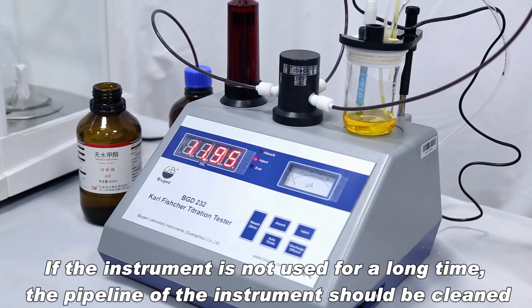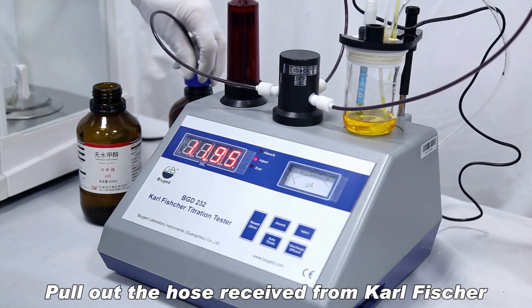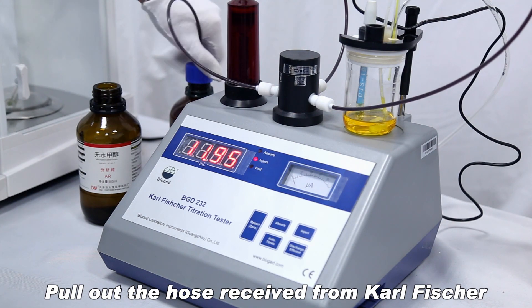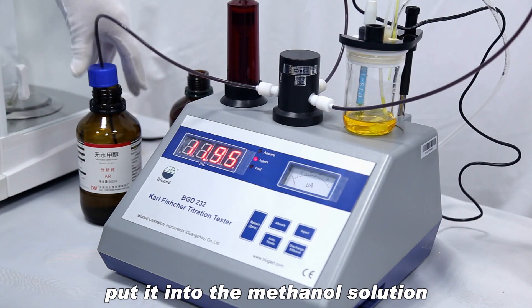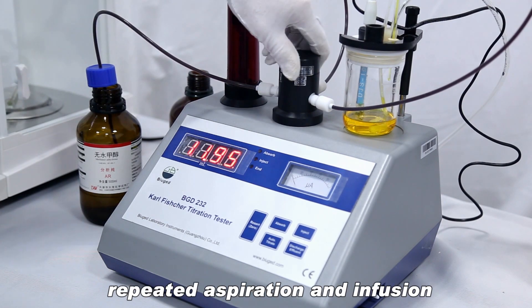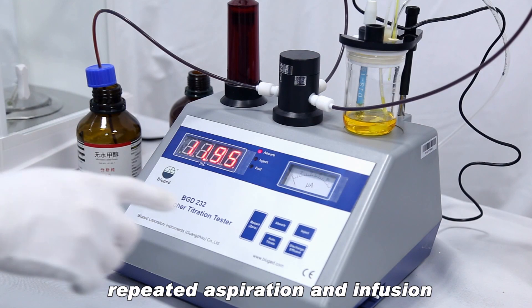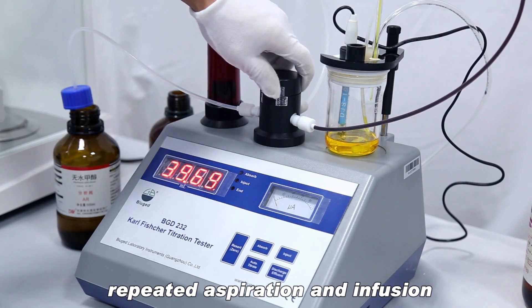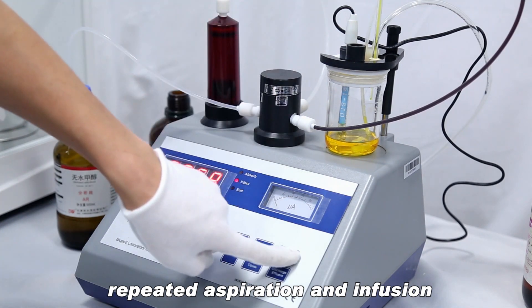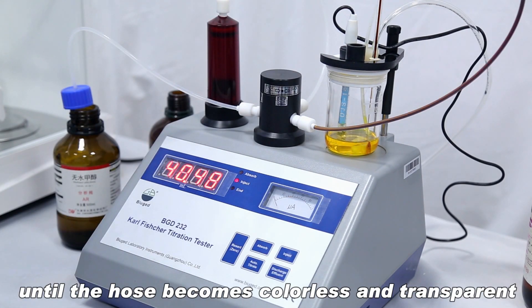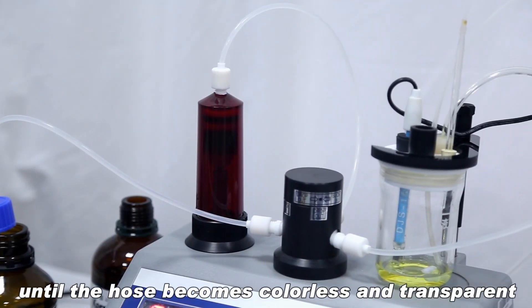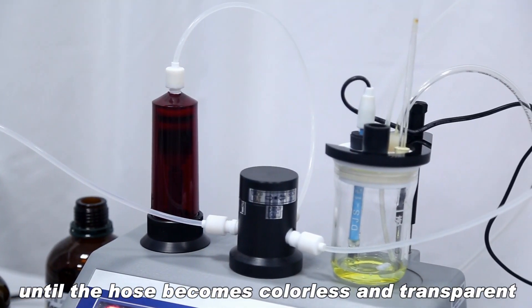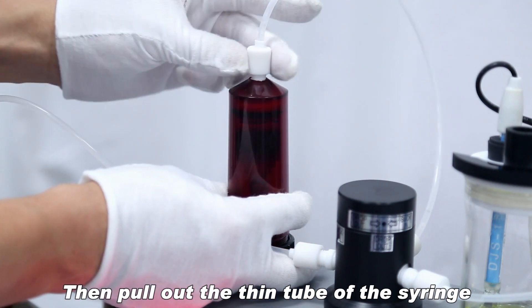If the instrument is not used for long time, the pipeline of the instrument should be cleaned. Pull out the hose received from Karl Fischer. Put it into the methanol solution. Repeated aspiration and infusion until the hose becomes colorless and transparent. Then pull out the thin tube of the syringe.